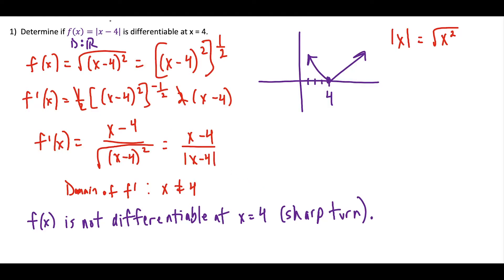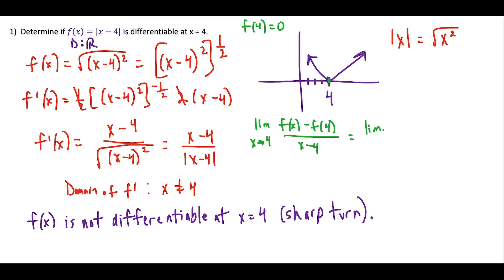The last way to do this is the limit definition — arguably the most complicated. Option three is to find the limit as x approaches four of [f(x) minus f(4)] over (x minus four). We need to know first that f(4) equals zero. When we substitute into this formula for differentiability, f(x) is |x minus four|, so we have |x minus four| minus zero, over (x minus four).